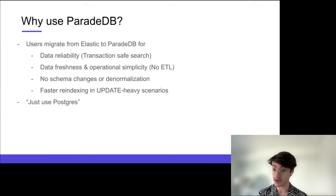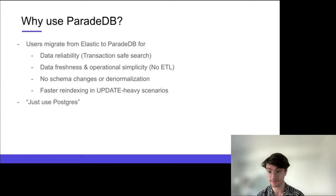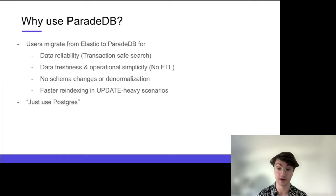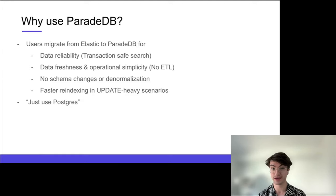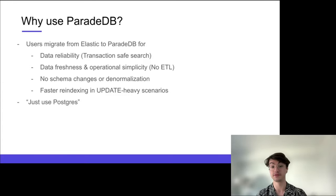Why is this even worth doing? When we tell people we improve search and analytics in Postgres, they wonder why. One thing that brings people from Elasticsearch to something like ParadeDB is data reliability — transaction safety on your search engine is very important. Many users complain Elasticsearch isn't reliable. You also get to remove ETL pipelines and delays. You don't have to denormalize your data, which is huge — the SQL and structured data format is a big deal, and in the search engine world it's often missing.